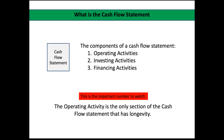The third item listed on the cash flow statement is financing activities. This covers things like issuing more shares — which is a way of financing and raising money for the business — issuing bonds, taking out loans. Issuing bonds or shares raises cash for the company, and that's the third category: financing activities.